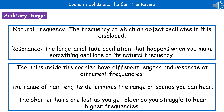The last thing we're going to consider is the auditory range — the range of sounds that we can hear as an individual. To understand this we need two definitions. First is natural frequency: the frequency at which an object oscillates when it's displaced. A good example is a ruler hanging off the edge of a desk — you hit it so it starts vibrating, and as you slide it further in, the vibrations change. Second is resonance: the large amplitude oscillation that occurs when you make something oscillate at its natural frequency.